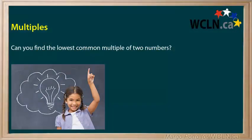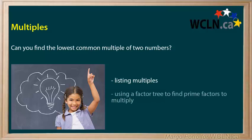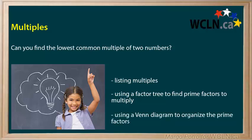Now you can find the lowest common multiple of two numbers. While listing multiples works, using a factor tree to find prime factors is the most reliable method for finding the lowest common multiple. Using a Venn diagram is really helpful to organize the prime factors. Thank you for watching this tutorial. This is Margot Poro for the Western Canadian Learning Network.